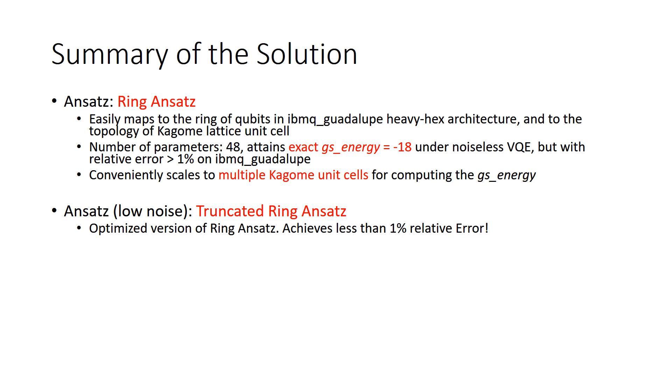An optimized version of ansatz, the truncated ring ansatz. The defining advantage of this ansatz is that it helps attain relative error which is less than one percent. And that will be discussed in the next few slides as well.